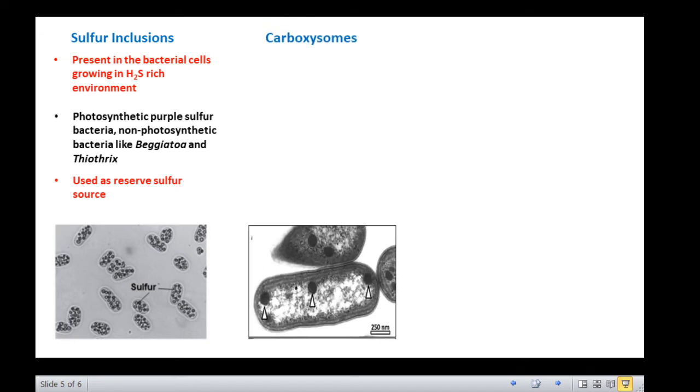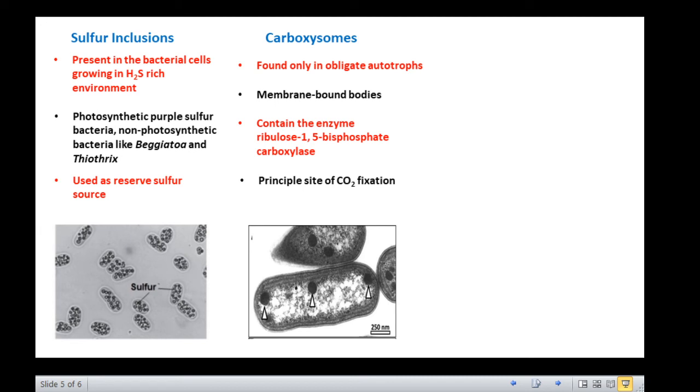Carboxysomes are important cell inclusions found mainly in obligate autotrophs. A number of photosynthetic bacteria like cyanobacteria, purple bacteria and chemo-autotrophic bacteria like nitrifying bacteria and thiobacilli contain polyhedral bodies called carboxysomes. These are membrane bound bodies about 100 nanometer in diameter. They contain the enzyme ribulose 1,5-bisphosphate carboxylase, RuBisCO, the most important enzyme in carbon dioxide fixation. Carboxysomes serve as the principal site of carbon dioxide fixation.